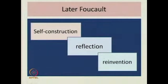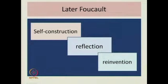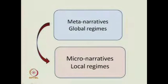We looked at later Foucault, who gives us a way around this problem. He says in his later work that self-construction, reflection, and reinvention are the very tools with which we can recreate ourselves. And finally, we saw that meta-narratives and global regimes give place to micro-narratives and local regimes.